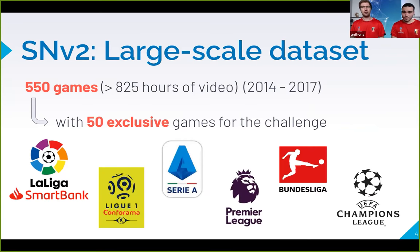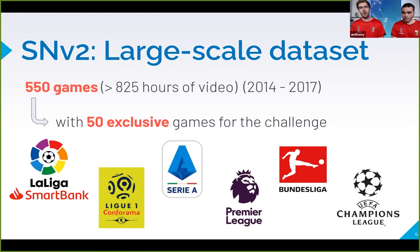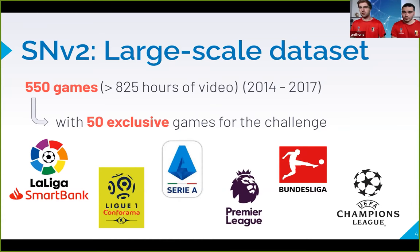So what is in the dataset? There are 550 games — 500 games from the original Sockernet dataset published by Silvio in 2018, and we added 50 games for the challenge. The games are taken from the best European championships: La Liga, Serie A, Premier League, Bundesliga, and Champions League, covering three seasons from 2014 to 2017.